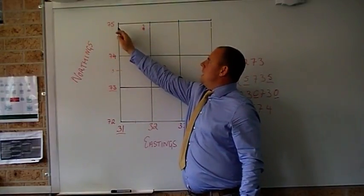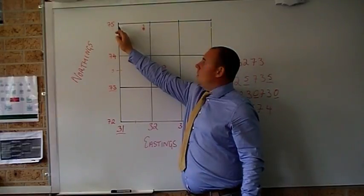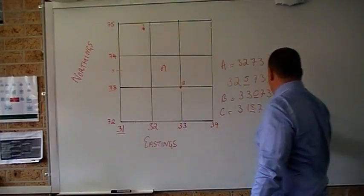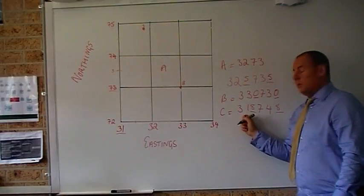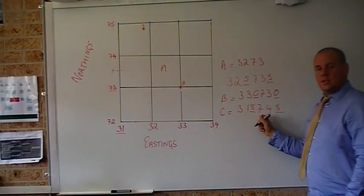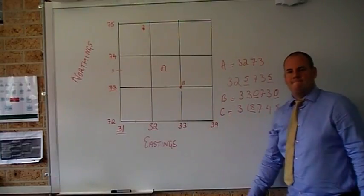It can't be up here. It's a little bit less than 75. Remember 75 would be 0. So I'm going to say that's about 8. So our grid reference for C is 31, 8, 74, 8. Okay. Cheers.